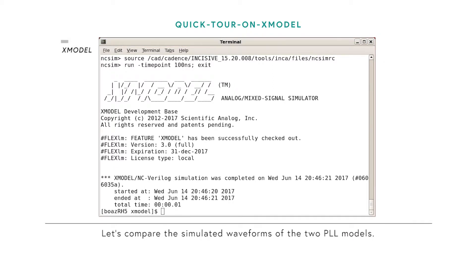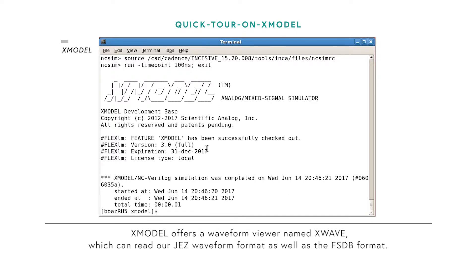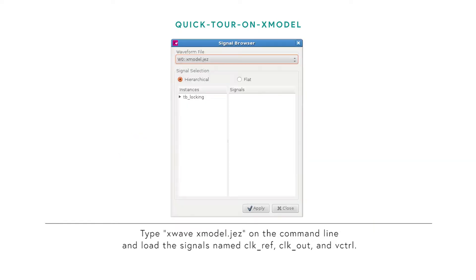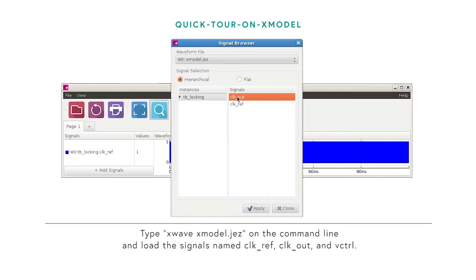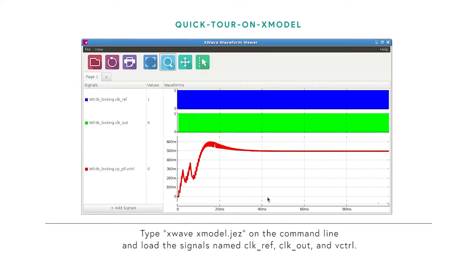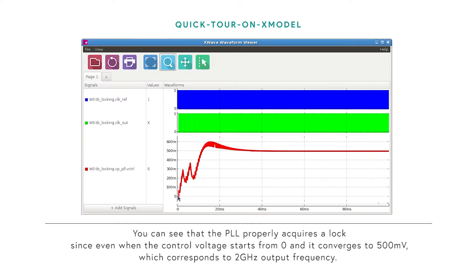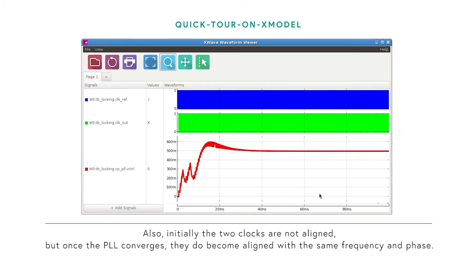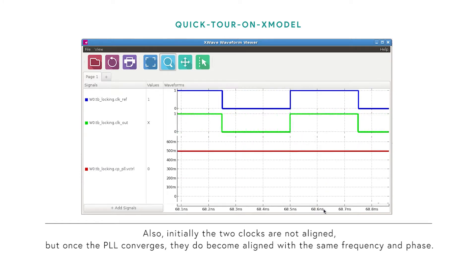Now let's compare the simulated waveforms of the two PLL models. X-Model offers a waveform viewer named X-Wave, which can read the JEZ waveform format as well as the FSTV format. Type X-Wave X-Model.JEZ on the command line and load the signals: clock underscore ref, clock underscore out, and V-Control. You can see from the waveform that the PLL properly acquires lock — the control voltage starts from zero and converges to 500 mV, corresponding to 2 GHz output frequency.